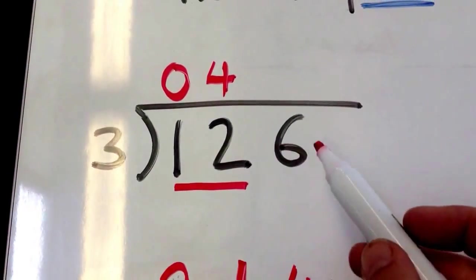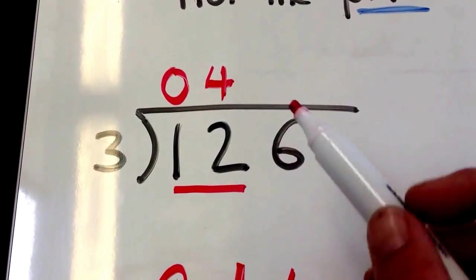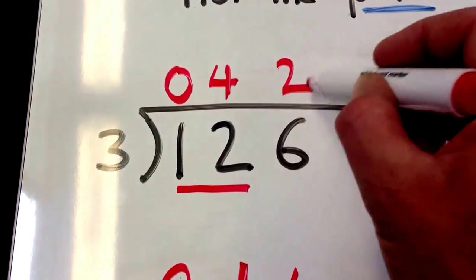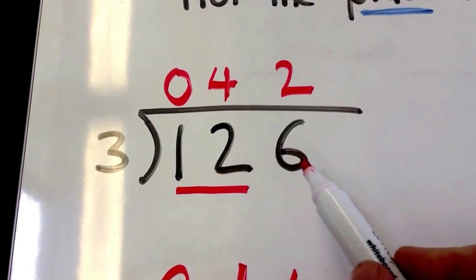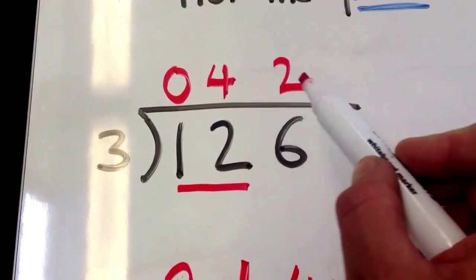Now we're left with the last number by itself: 6. How many times does 3 go into 6? We say twice. So 126 divided by 3 equals 42.